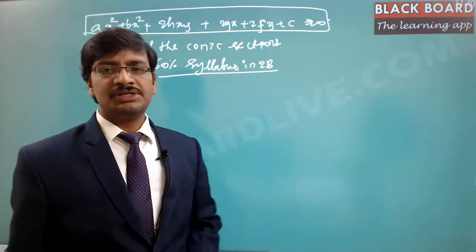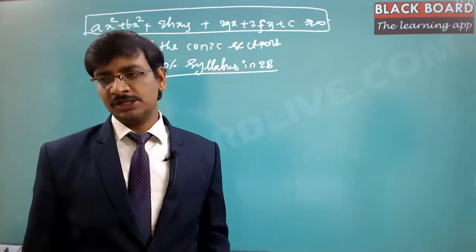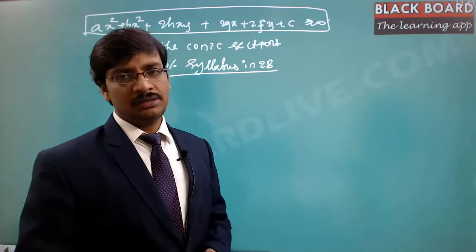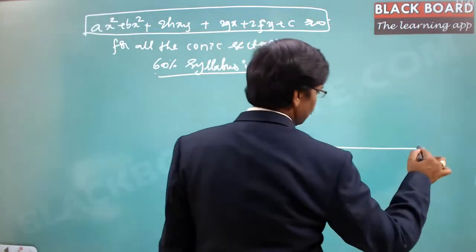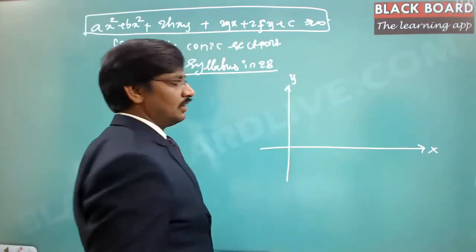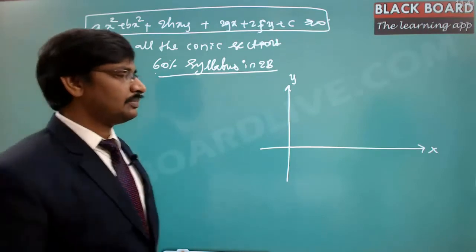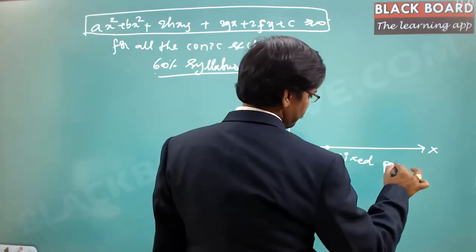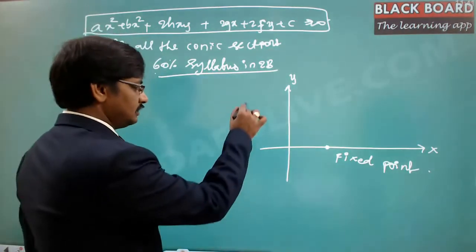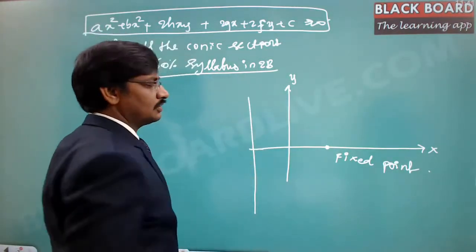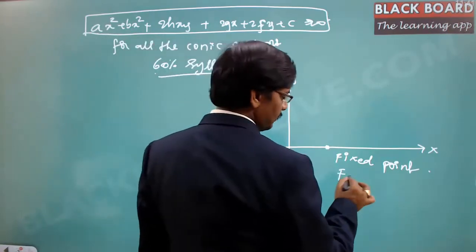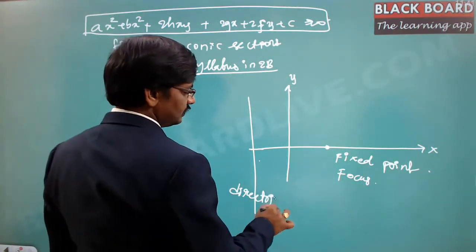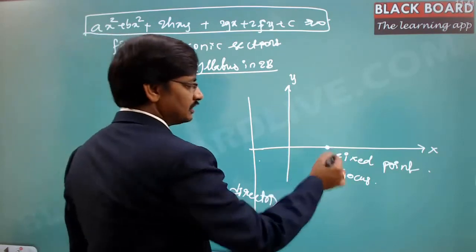For all the conic sections, the equations are derived from a single principle. Suppose there is a fixed point and a coordinate axis with an x-axis and y-axis. We take one fixed point at a particular location — this is called the focus — and one fixed line, which is called the directrix.